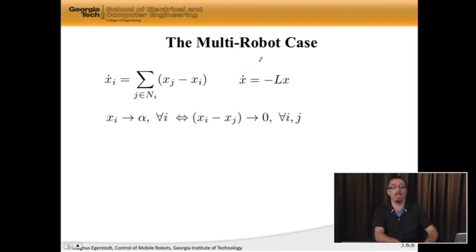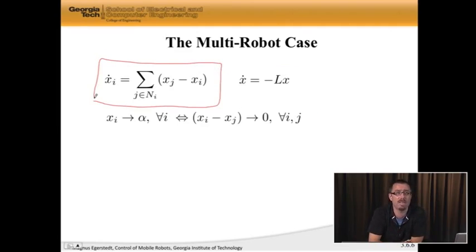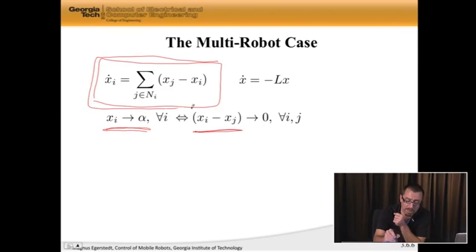So just like before, if I have this thing, and in fact, it doesn't have to be scalar agents, what I do have is that all the agents go to the same alpha, or in other words, the difference between the agents will actually disappear. And what we did here is we designed the control law. We actually designed this thing here. And this thing is so useful that it actually has its own name. It's known as the consensus equation, because it makes agents agree.